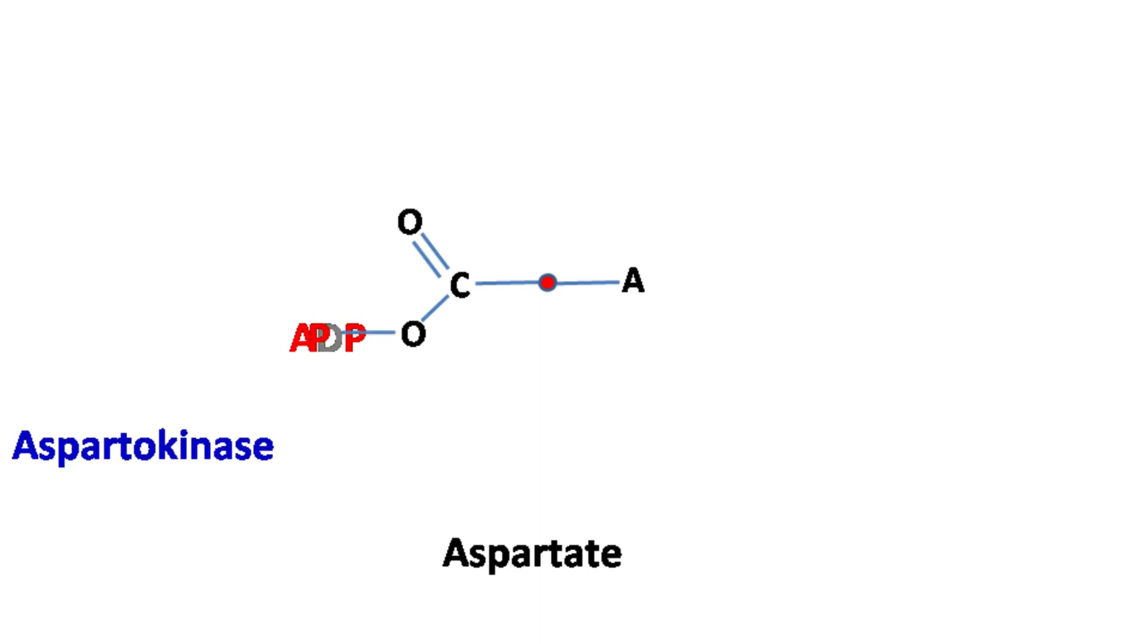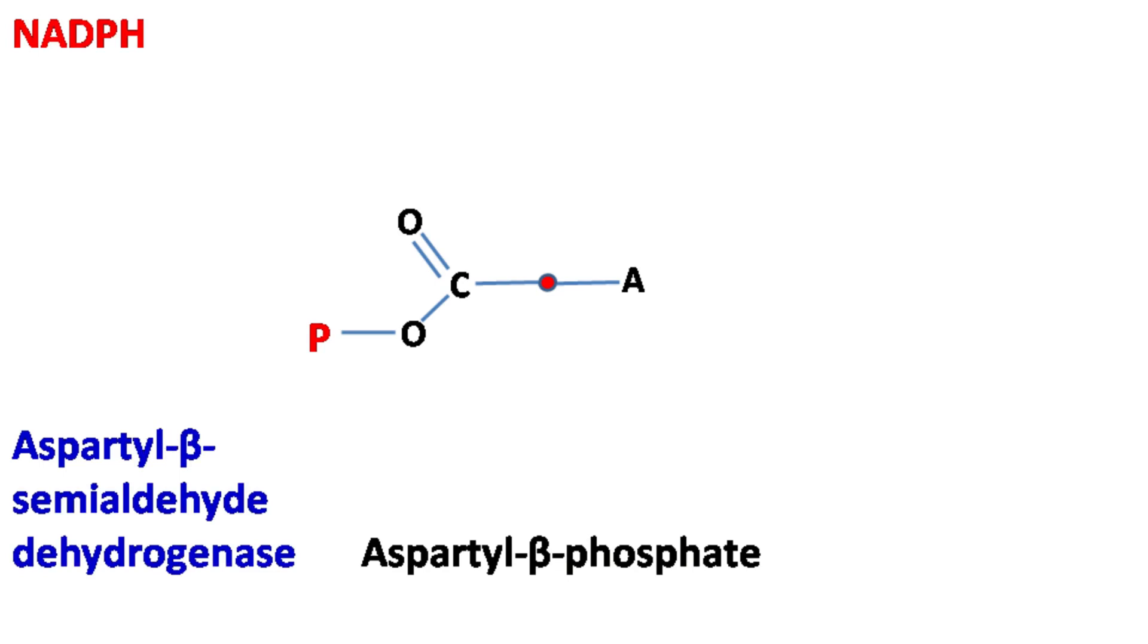Aspartyl beta-semialdehyde dehydrogenase removes this phosphate with the help of NADPH, which gets converted to NADP+. This results in the formation of aspartyl beta-semialdehyde.